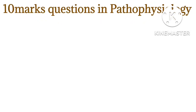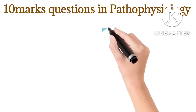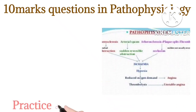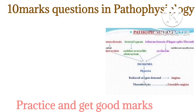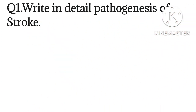Here are 10 very important marks questions in pathophysiology. By practicing only these questions, you can score maximum marks in your examination. These questions are basically collected from the PVA publication, and even if you practice just these, you will score very good marks. The first question is: write in detail the pathogenesis of stroke.